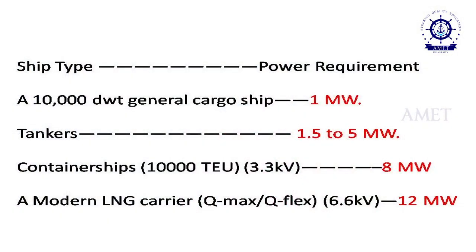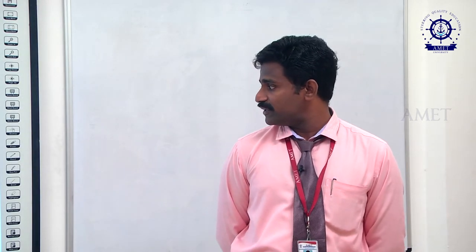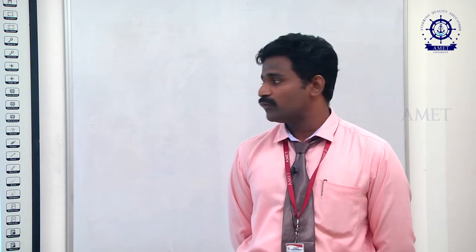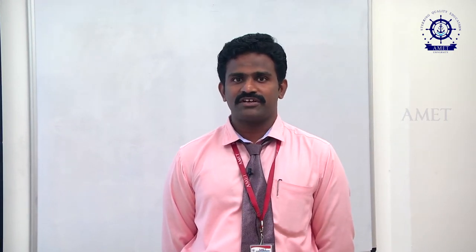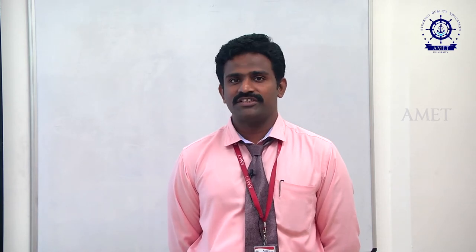For a tanker ship, the power requirement is 1.525 megawatts. For a container ship, it is 8 megawatts. For a modern LNG carrier, the system operates at 6.6 kV with 0.12 megawatts. Generally, normal ships use 6.6 kV power generation at the main switchboard, using 2 or 3 generators.